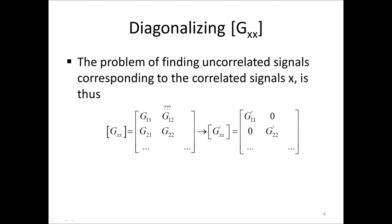To find uncorrelated signals instead of some correlated measured signals, we go from the matrix GXX of the correlated signals to a new matrix G'XX of some other virtual signals X', and this G'XX matrix is diagonal.